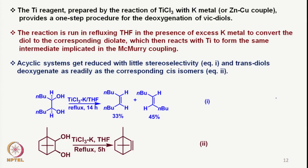The same zinc-copper couple — or one can also use potassium metal — with TiCl₃ allows deoxygenation of vicinal diols to the corresponding olefin if the reaction is carried out at high temperature. That means if the reaction is run in refluxing THF with excess potassium metal, the diols are converted to the corresponding diolate and they react with titanium to form the same intermediate implicated in McMurry coupling. We will discuss in a minute how the two converge into the same intermediate.